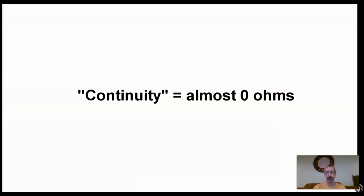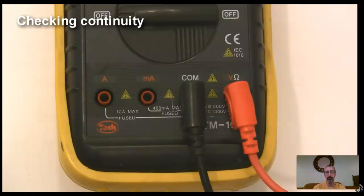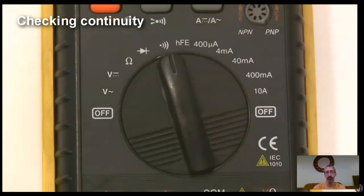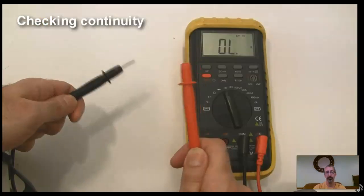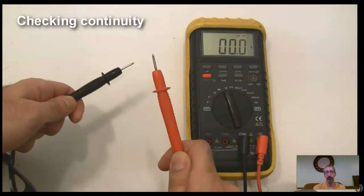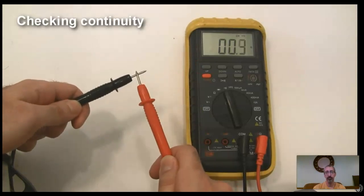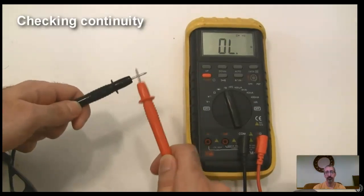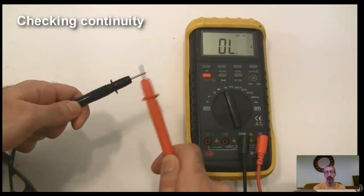Next, let's talk about continuity. Measuring continuity basically just means checking whether or not there's a good connection between any two points in a circuit. To measure continuity, make sure your red probe is in the jack labeled continuity, or in my case resistance, and set the dial to the continuity setting. Test that the continuity function is working correctly by touching the probes together. Whenever there's almost zero resistance between two points, the multimeter will beep.